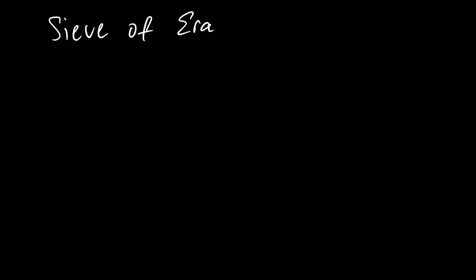Let's next explain what is the algorithm called the Sieve of Eratosthenes. This algorithm is a very ancient algorithm for finding prime numbers up to any given number — say, number n, which is equal to 49 in our case.